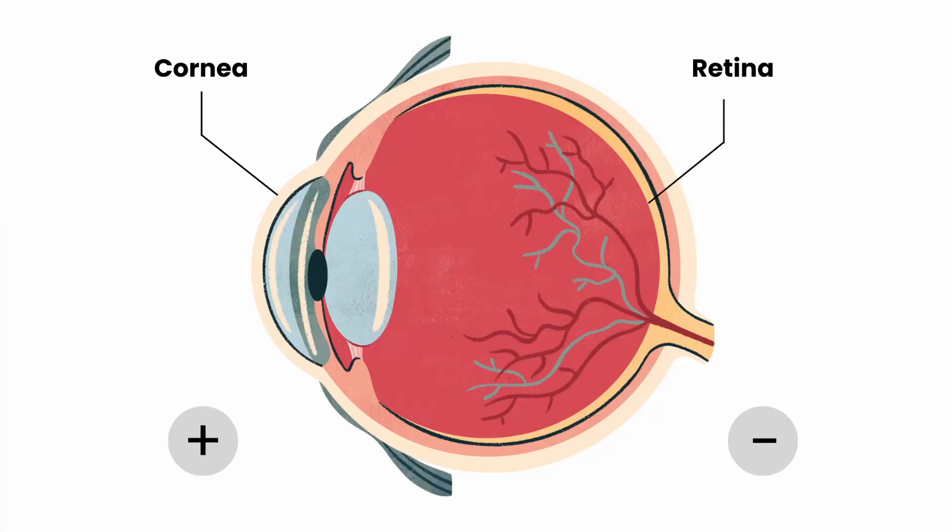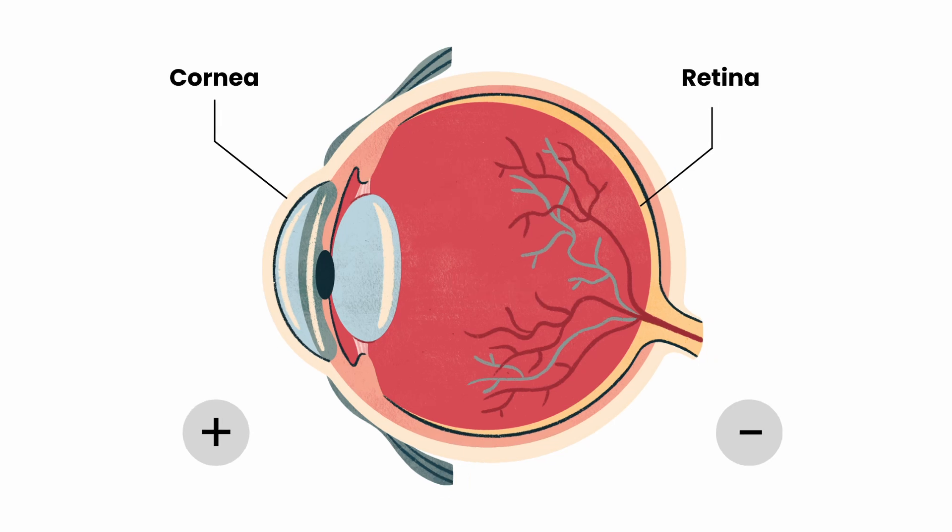EOG stands for electro-oculography — that's why there's a short form. It's basically the electrical potential difference between the front and the back of the eye. That's not so basic. To put it another way, it measures electricity in your eyes.